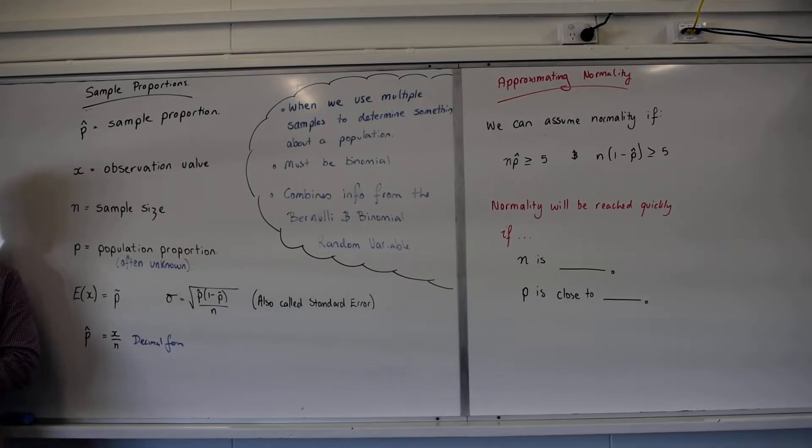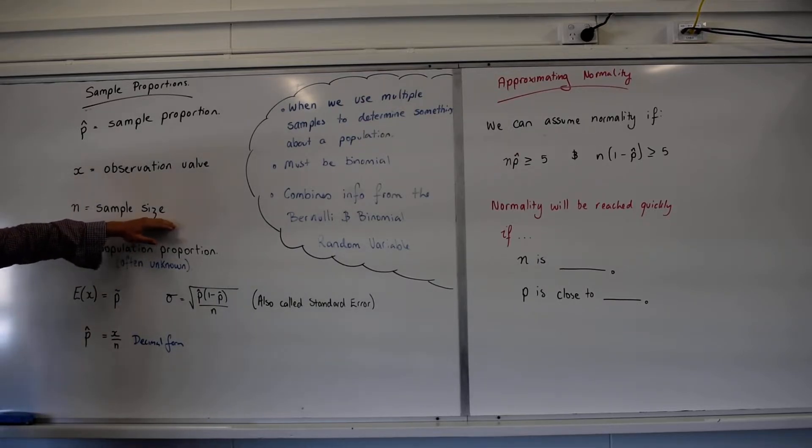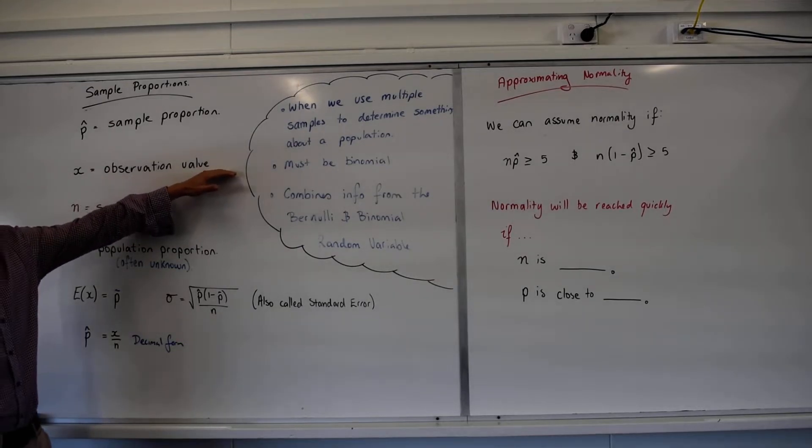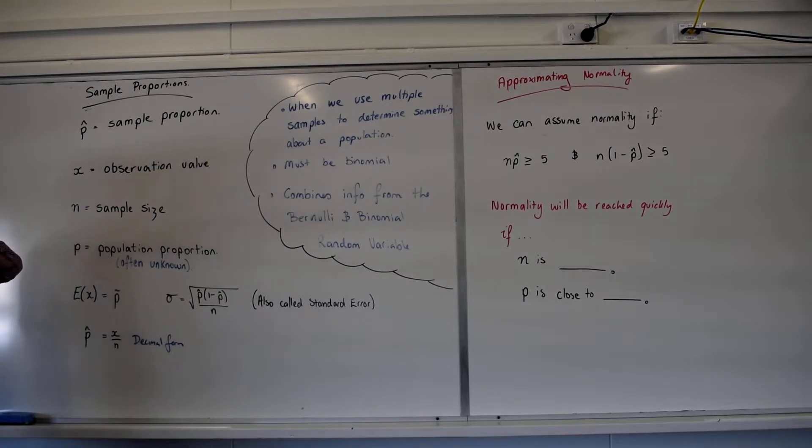Wait, to get the sample size, how would that be different from the sample proportion? So sample size is saying if I was to get a sample size of 100 people, 73 said they like Queensland, my sample proportion is 0.73, but my sample size is 100.